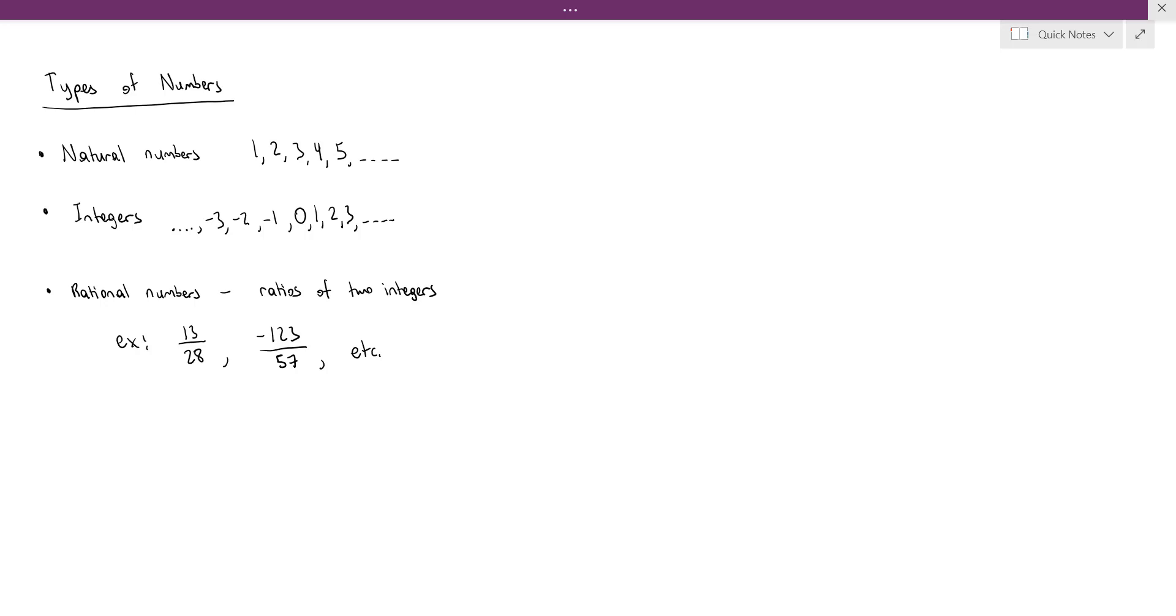Now, this may be worth noting that the rational numbers contain the integers. And that's because every integer is a ratio between itself and the number 1. For example, 3 over 1 gives you 3, 0 over 1 gives you 0, and so forth.